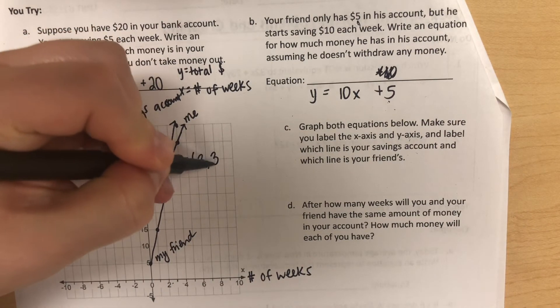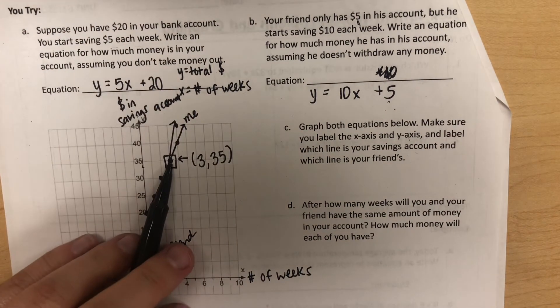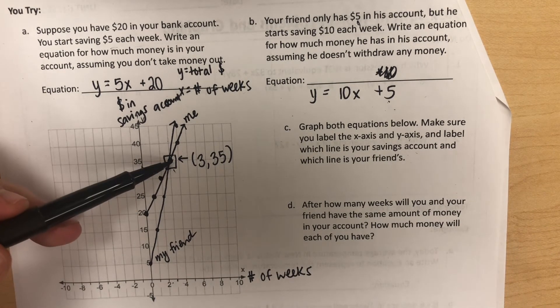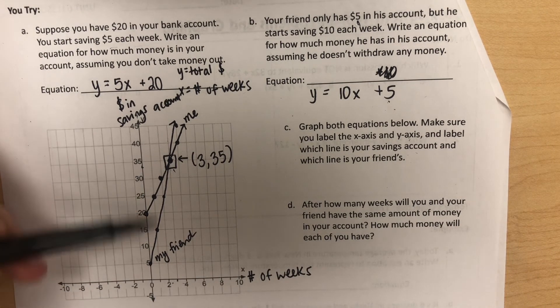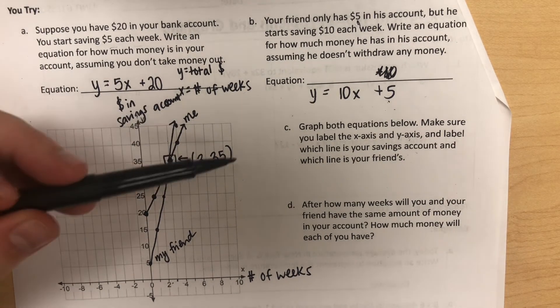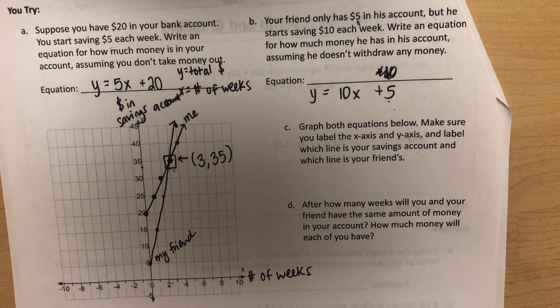That point represents the week you both had the same amount of money. At week 3, you both had $35. Before that, you had different amounts. After that, you've got different amounts. That's the week where the amounts are the same. So to answer the question, after how many weeks? We could say after 3 weeks.